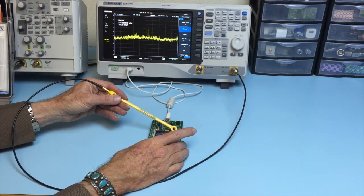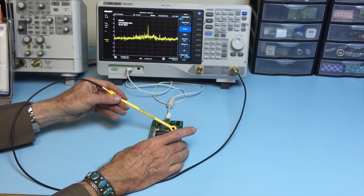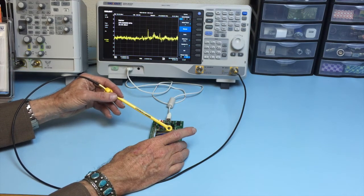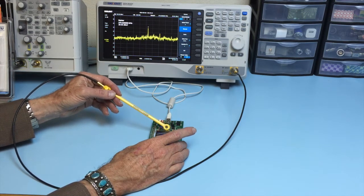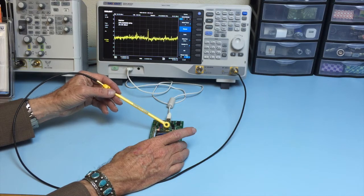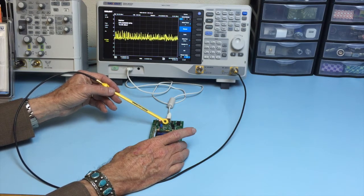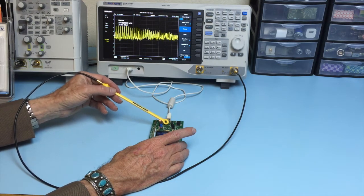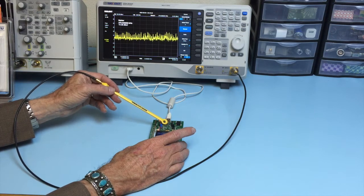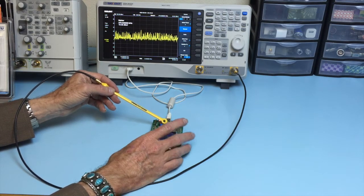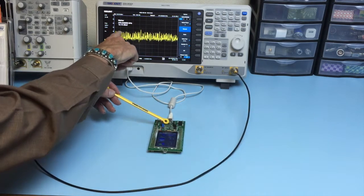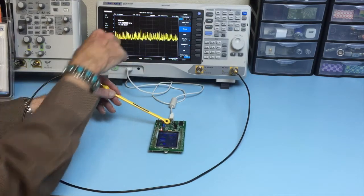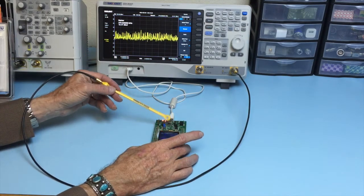So broadband noise is generally caused by digital switching, for example, address and memory bus activity, or switching mode power supplies that are on your circuit board. You can see quite a bit of, now this is all narrowband signals, but there's certainly a lot of it there.